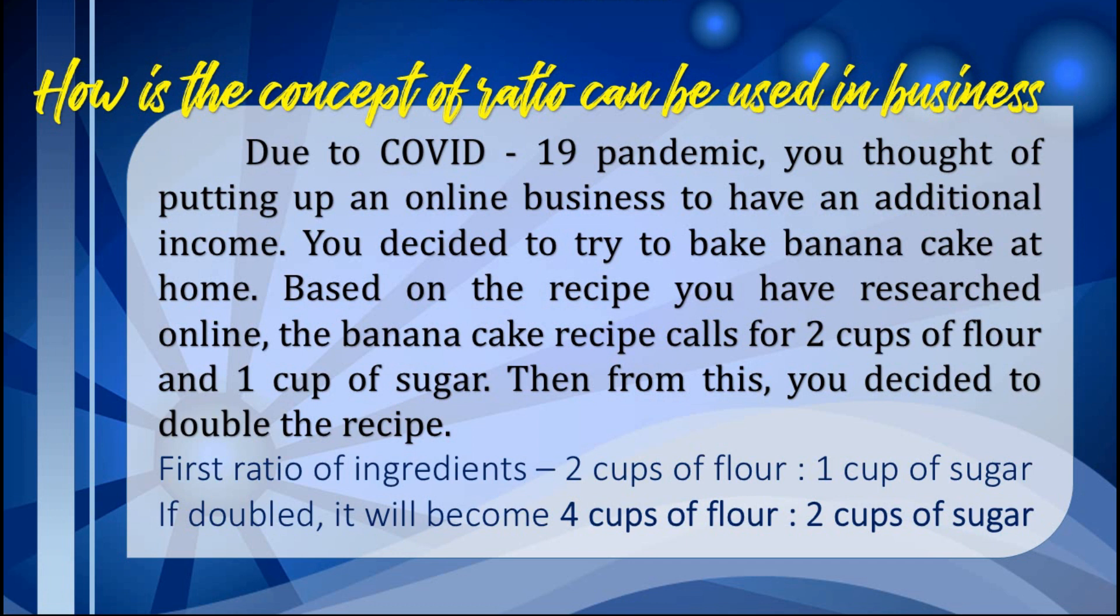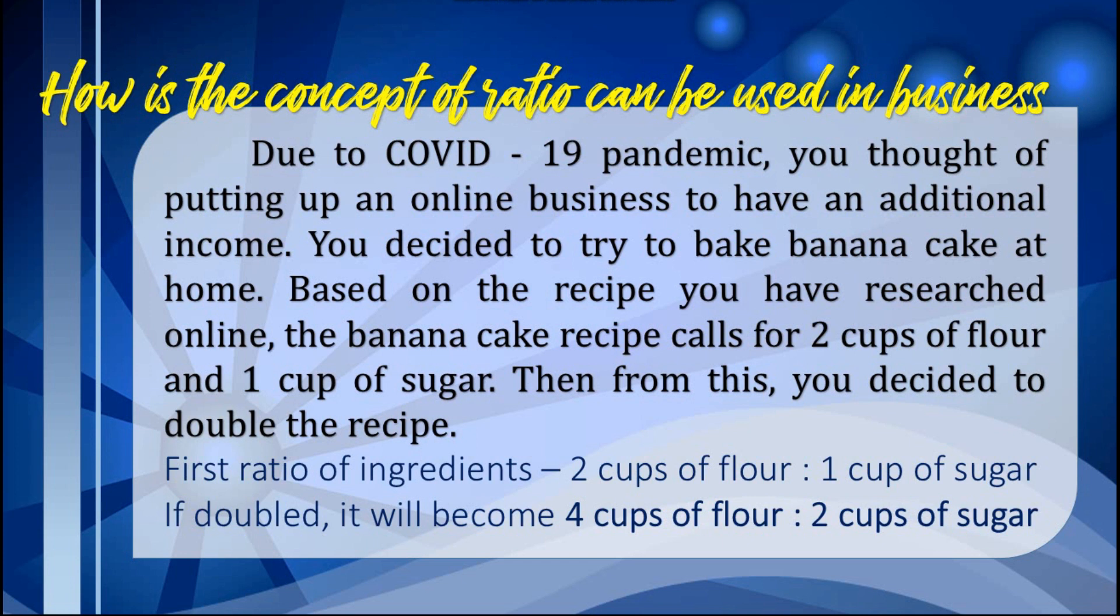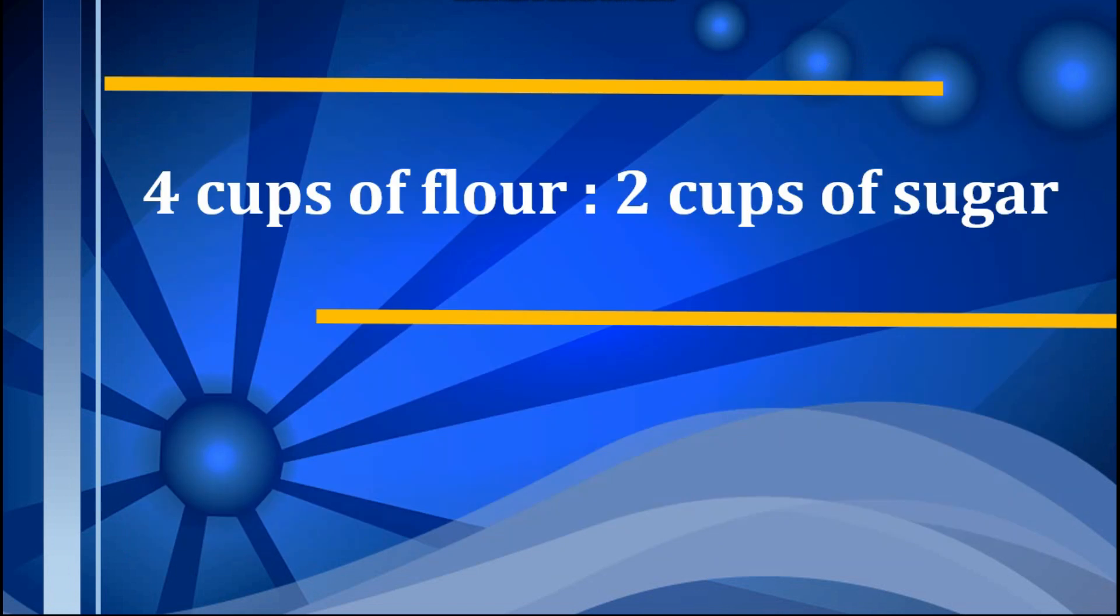The given ratio of ingredients is 2 cups of flour to 1 cup of sugar. So if you are going to double the recipe, it will become 4 cups of flour to 2 cups of sugar. This example shows that if you're going to have an online business, you need to use the concept of ratio for your ingredients.